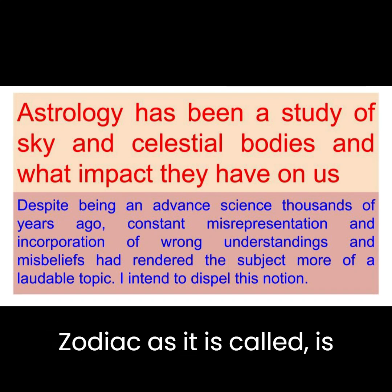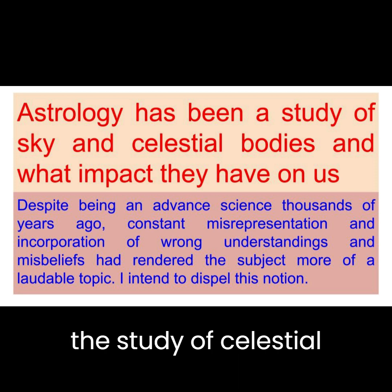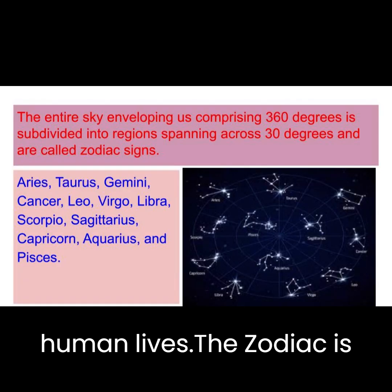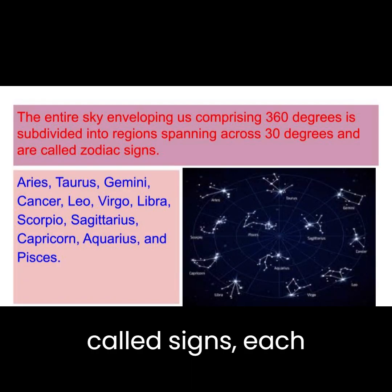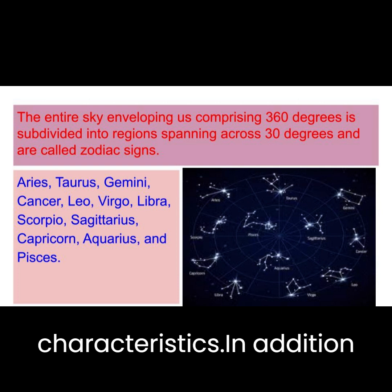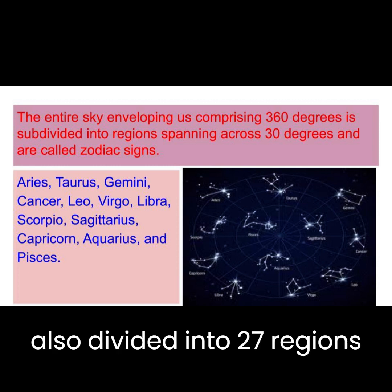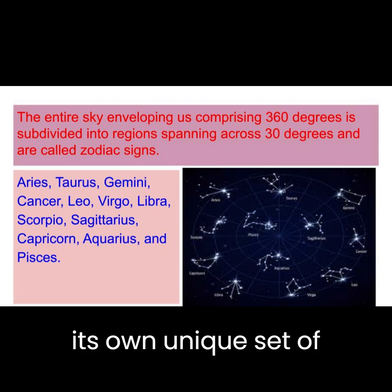The sky around us, or the zodiac as it is called, is an important concept in Vedic astrology, which is the study of celestial bodies and their impact on human lives. The zodiac is divided into twelve regions called signs, each associated with a specific set of qualities and characteristics. In addition to the signs, the zodiac is also divided into twenty-seven regions called nakshatras, each with its own unique set of attributes.